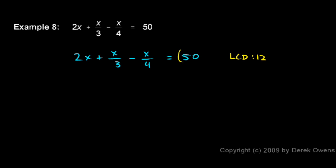So both sides of this equation get multiplied by 12. And on the left, we distribute. First, we have 12 times 2x, and it should be pretty easy to see that that's 24x.